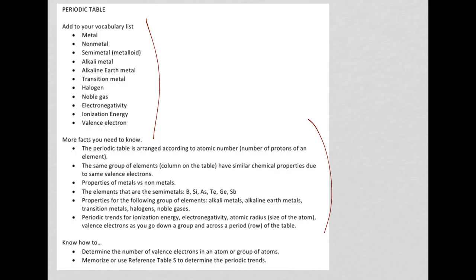Also, you want to be able to determine valence electrons. Remember your outermost electrons in an atom or for a group of atoms, looking at the periodic table. And you want to make sure that you use reference table S whenever you can to look at periodic trends. And also, it has the name that goes along with the symbol or the symbol that goes along with the name.